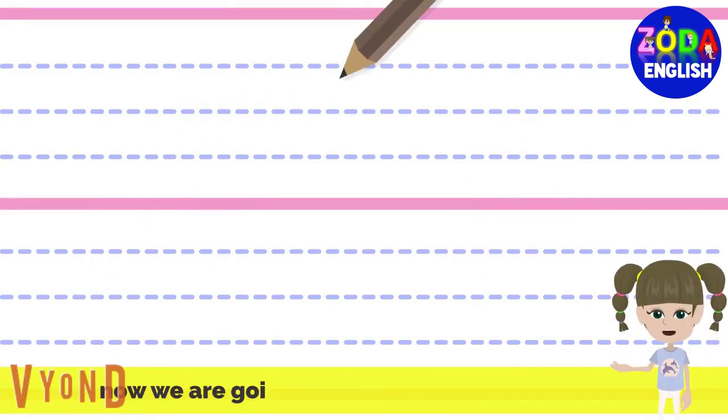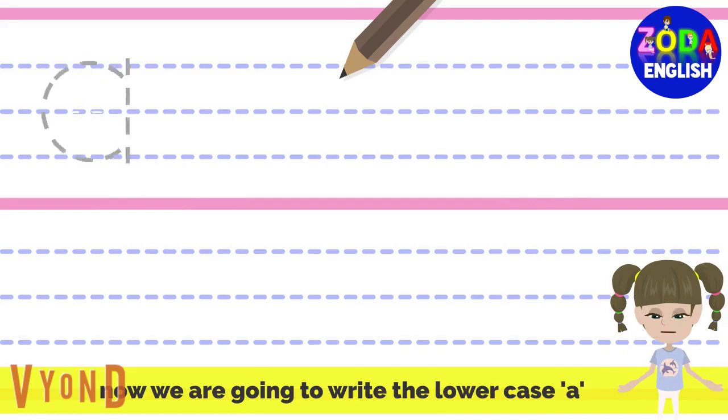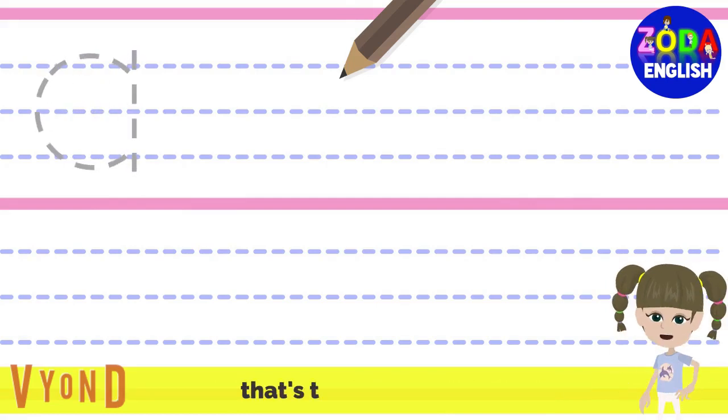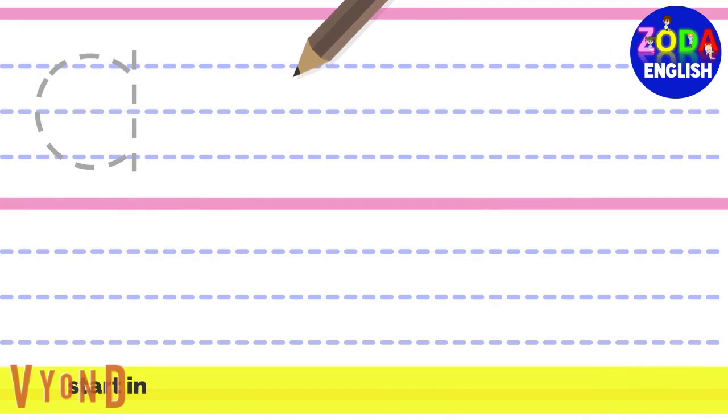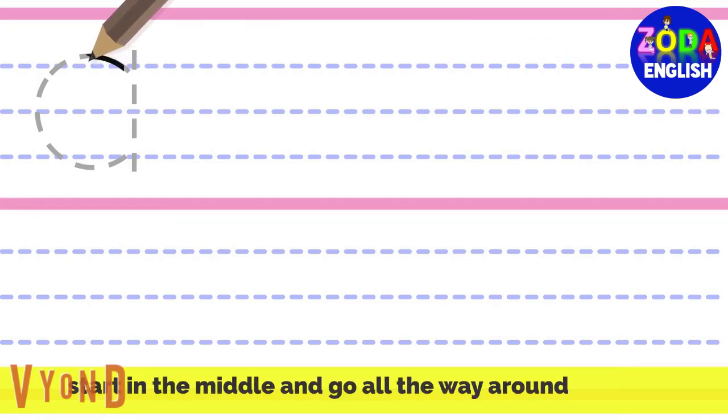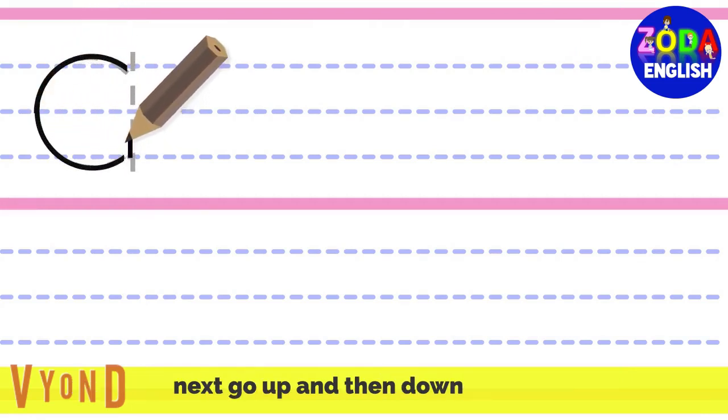Now, we are going to write the lowercase A. That's the small A. Start in the middle and go all the way around. Next, go up and then down.